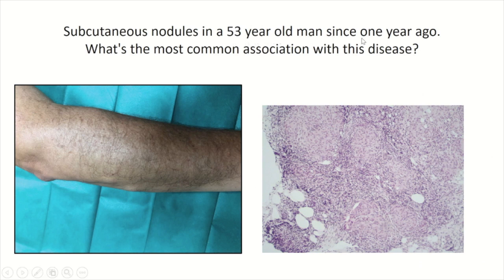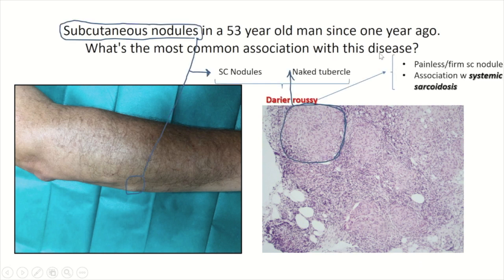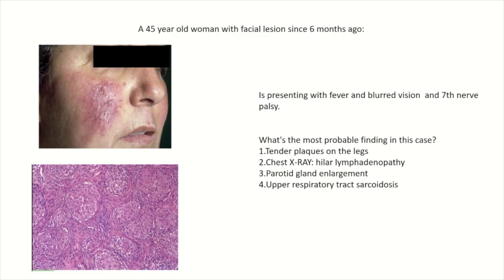Subcutaneous nodules in a 53-year-old man since one year ago — what is the most common association? There are subcutaneous nodules with histopathology showing naked tubercles indicative of sarcoidosis. Darier-Roussy is a variant of cutaneous sarcoidosis in which there are painless subcutaneous nodules associated with systemic sarcoidosis — so its most common association is systemic sarcoidosis.